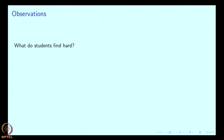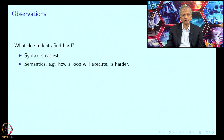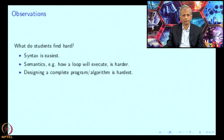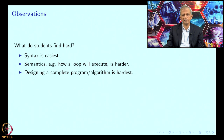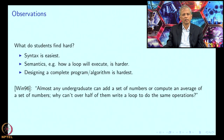Some observations on what students find hard: the summary is that syntax is relatively easy, semantics — that is, how a loop will execute — is harder, and designing a complete program or algorithm is hardest. Many students are not really getting this or are having great difficulty with it. This sentiment is echoed by Winslow, who says: almost any undergraduate can add a set of numbers or compute an average, so why can't over half of them write a loop to do the same operation?